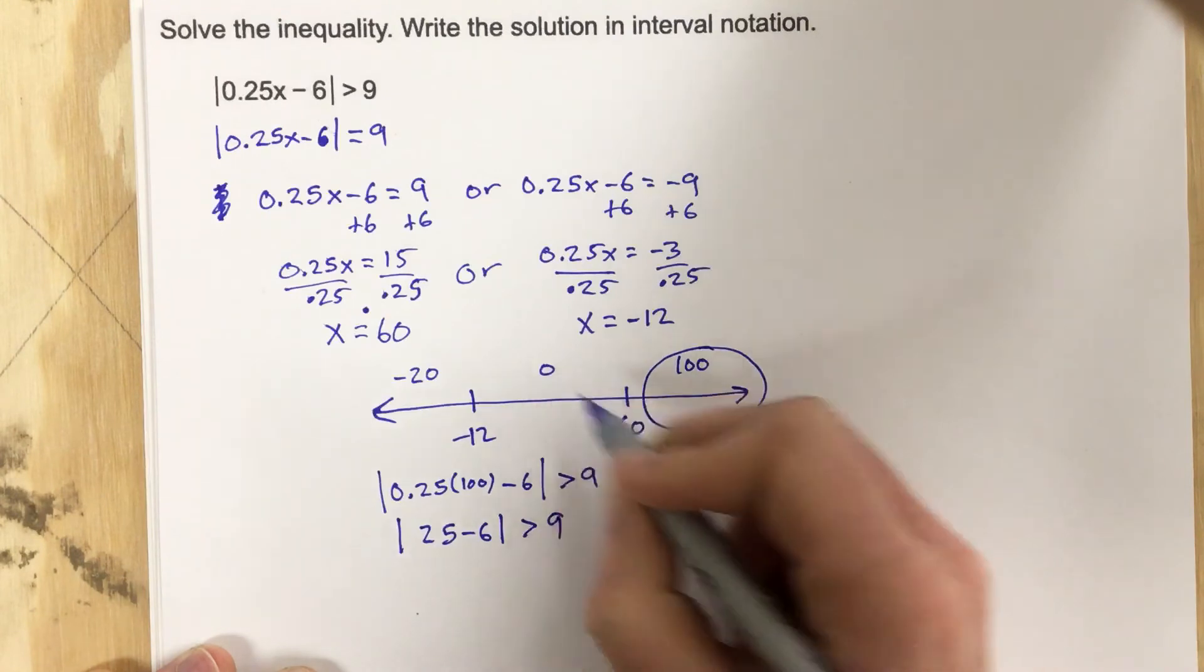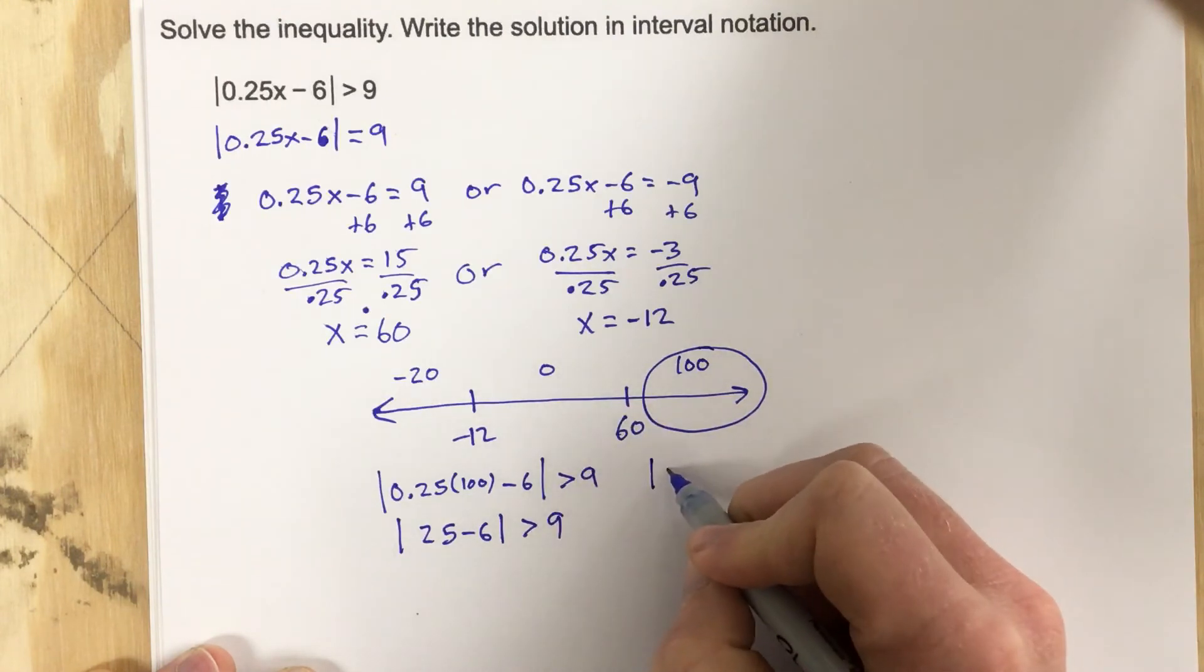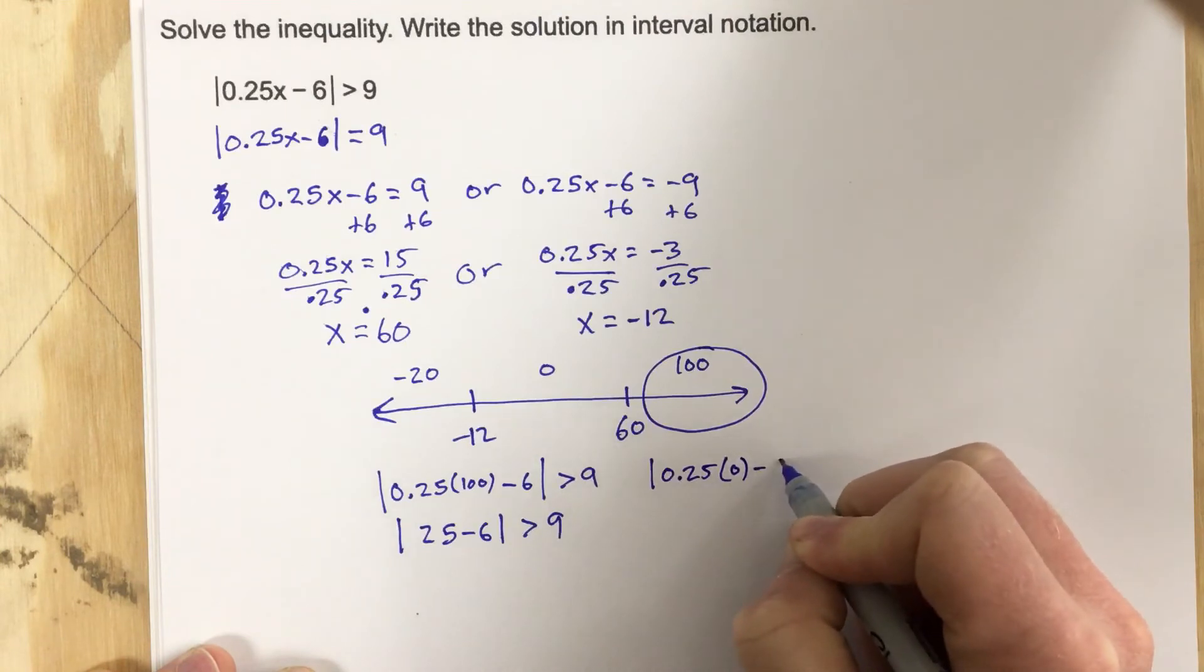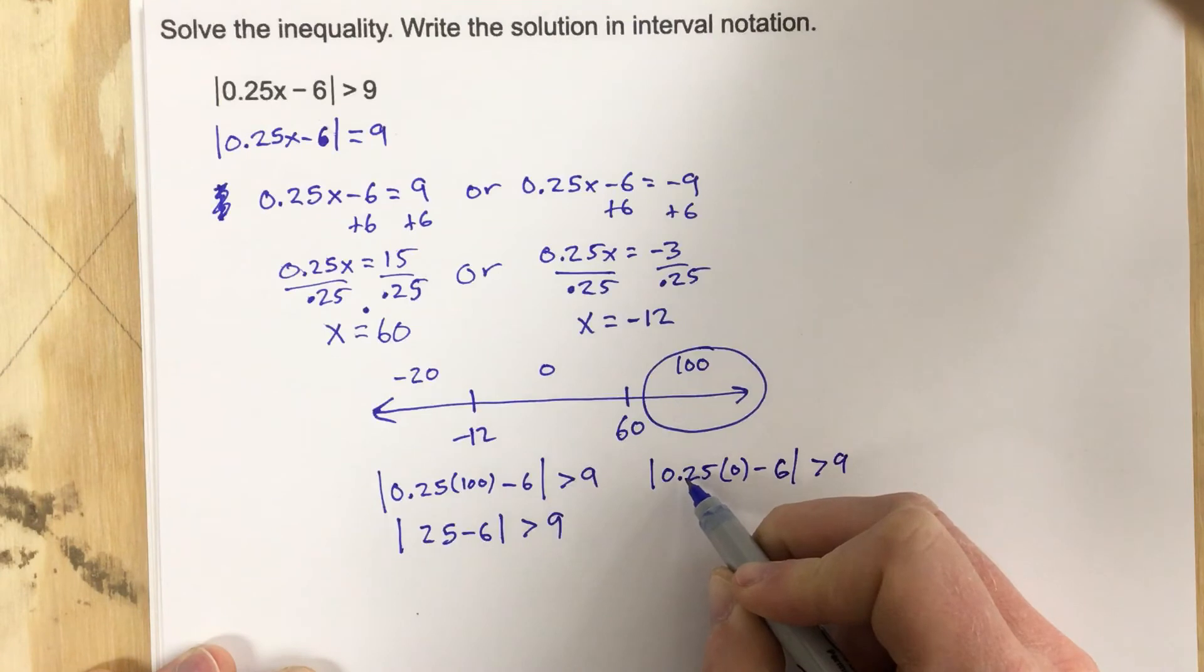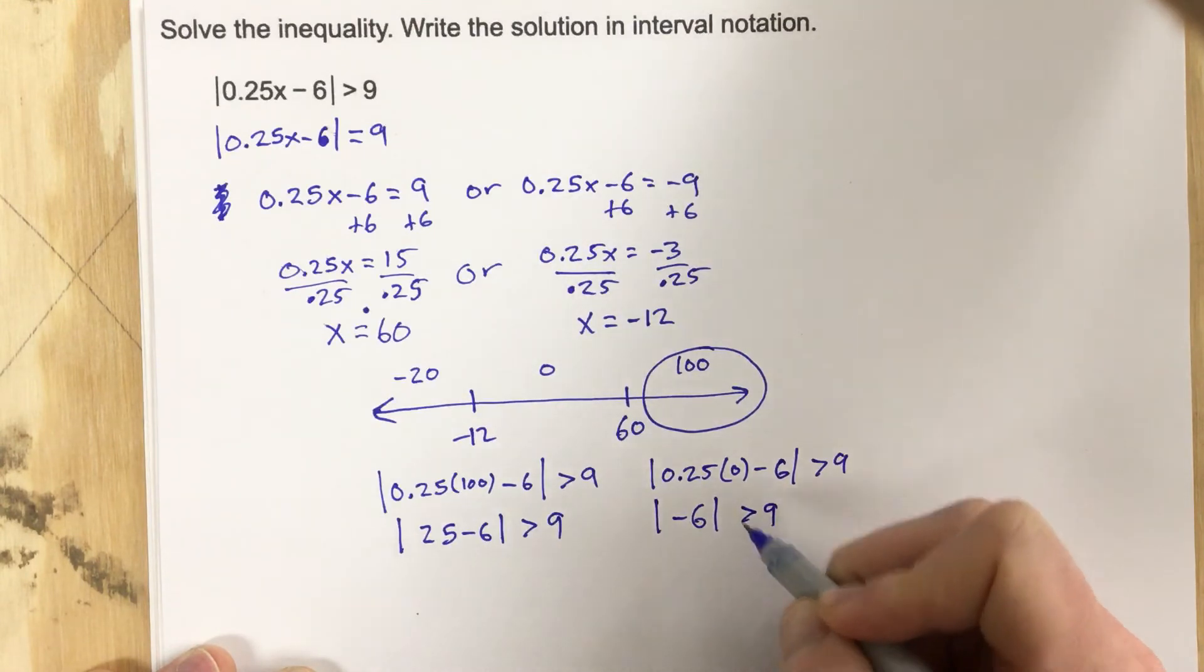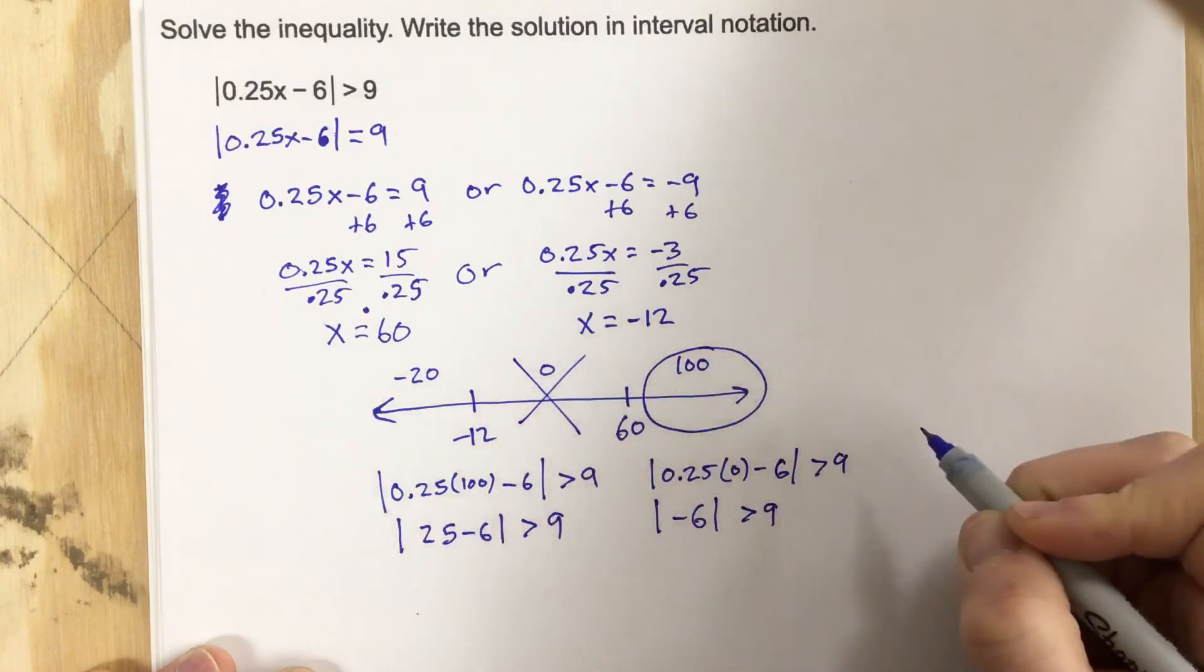Then I'm going to do the 0 part. So I do the absolute value of 0.25 times 0 minus 6 greater than 9. When I take 0.25 times 0, I get negative 6 absolute value, greater than 9. Is that true? Well, when I take the absolute value, I get 6. Is that bigger than 9? No, it doesn't work there.